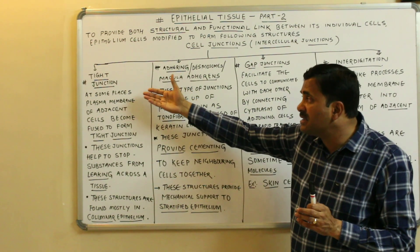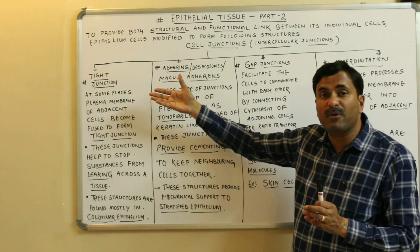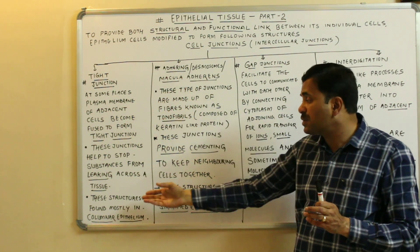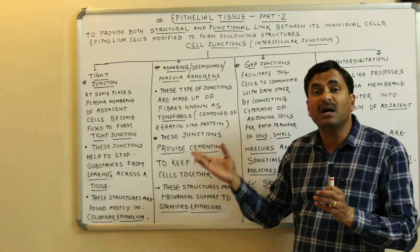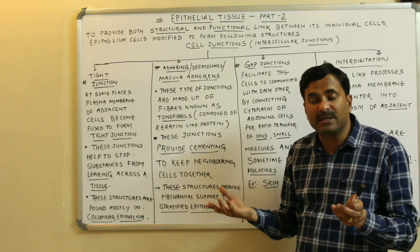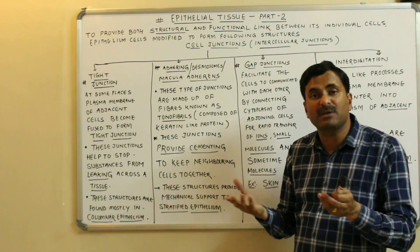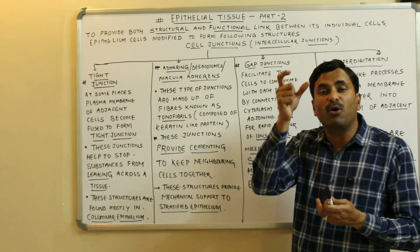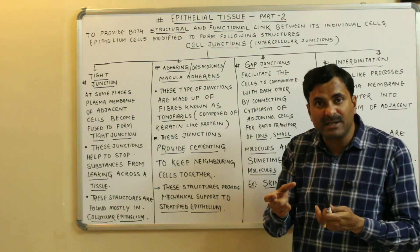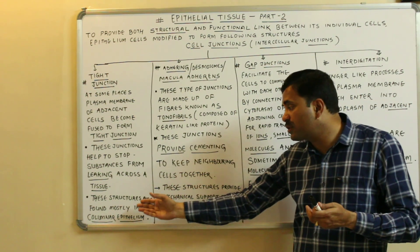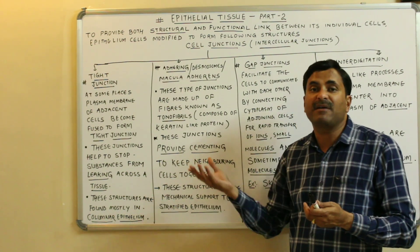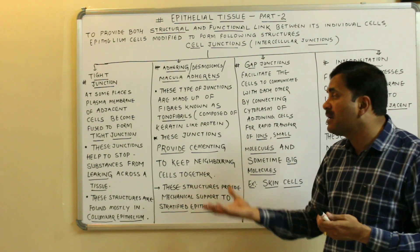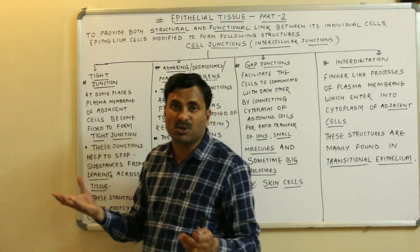Tight junctions are found mostly in the columnar epithelium — epithelium in which the cells are column-like or pillar-like elongated cells. The cells of the columnar epithelium have these tight junctions, which prevent the leakage of any substances across the tissue.